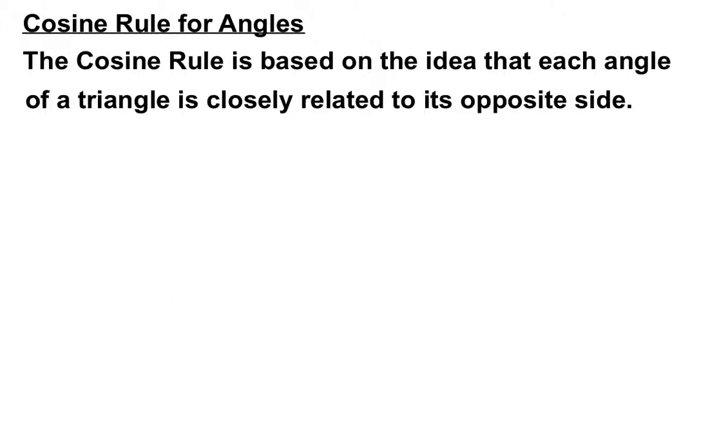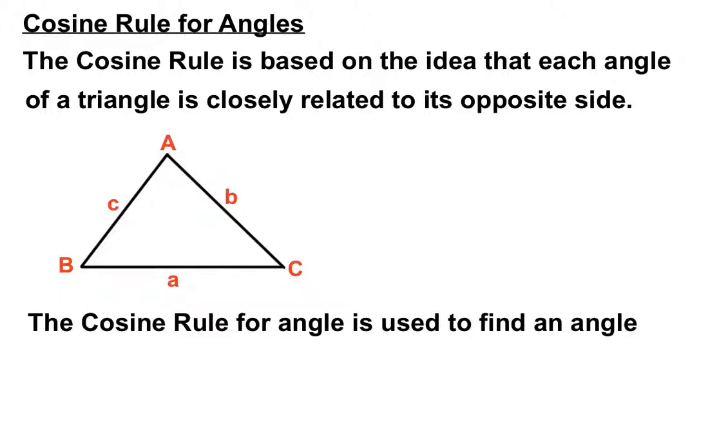The cosine rule is based on the idea that each angle of a triangle is really closely related to its opposite side. The cosine rule for angles is used to find an angle when we're given three lengths, all three lengths of all three sides.